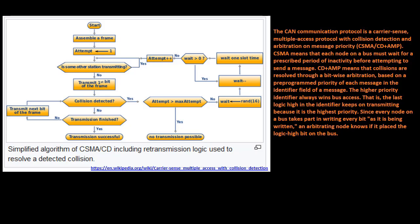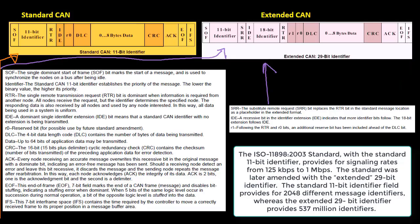The ISO standard with the standard 11-bit identifier provides for signaling rates from 125 kilobits per second to 1 megabits per second. The standard was later amended with the extended 29-bit identifier. The standard 11-bit identifier field provides for 2048 different message identifiers, whereas the extended 29-bit identifier provides 537 million identifiers.